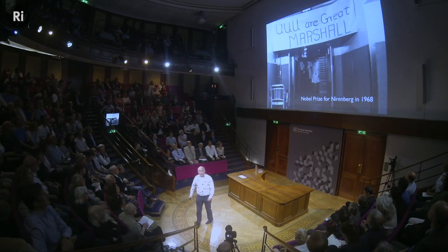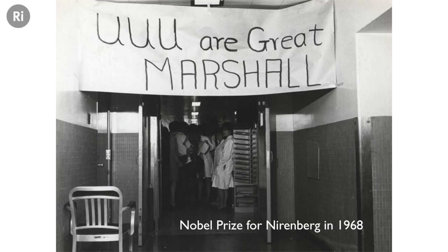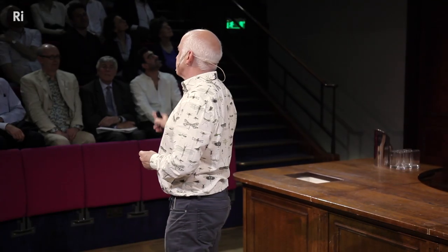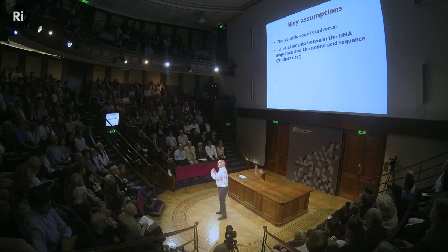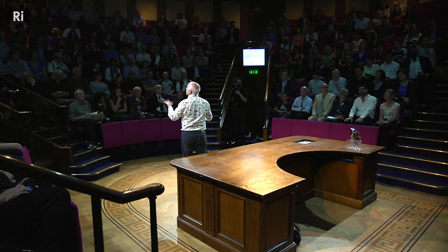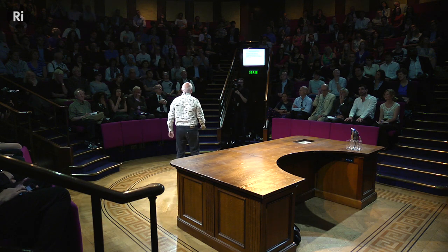Marshall Nirenberg also received a Nobel Prize — in 1968 — and there's a banner they put up in his lab to celebrate. Throughout this time, everybody had two key assumptions: firstly, that the genetic code was universal, that all organisms shared it; and secondly, that there'd be a one-to-one relationship between the DNA sequence and the amino acid sequence — you could read off codon, amino acid, codon, amino acid. Everybody accepted these as working hypotheses. Within 10 years, both were shown to be untrue.